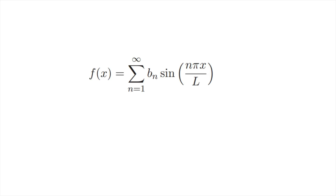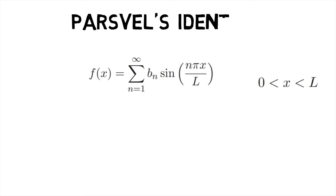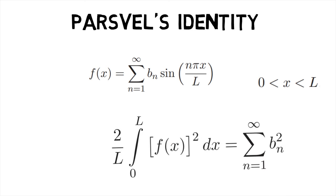For all f of x equal to summation of bn into sine of n pi x upon l from n equals 1 to infinity where x lies in the open interval of 0 to l, Parseval's identity states that 2 upon l into integral of f of x squared dx from 0 to l is equal to summation of b squared n from n equals 1 to infinity.